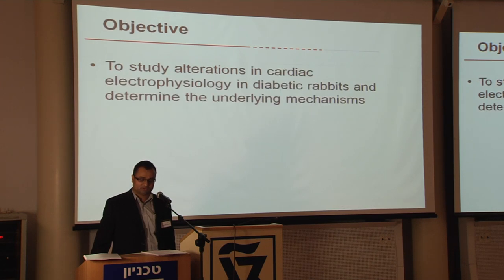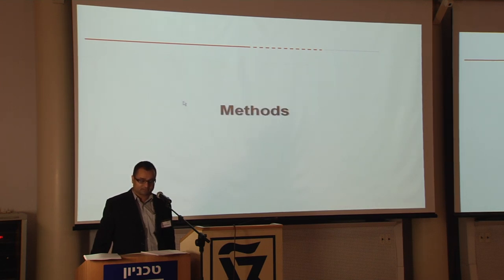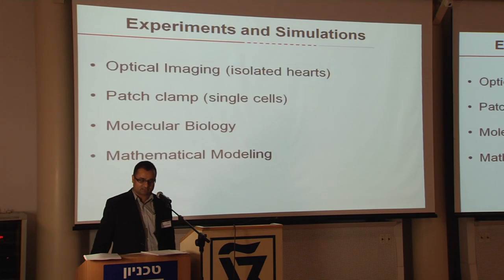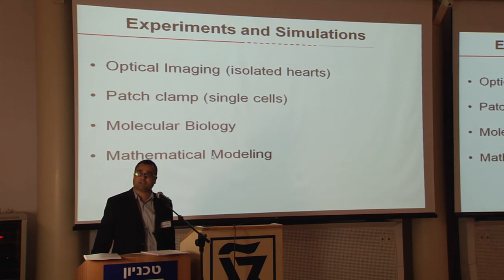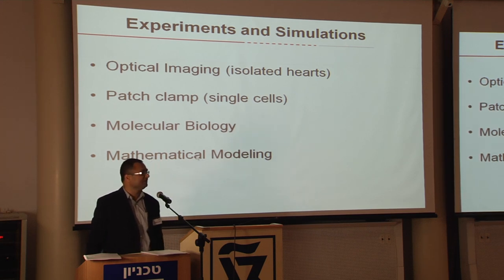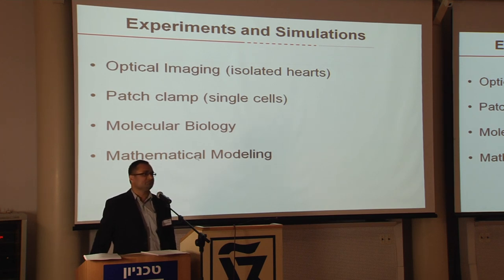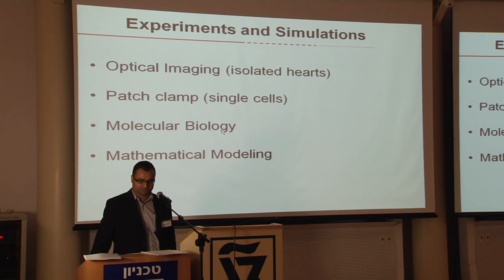With that background, I started my studies in diabetic rabbits. The methods I utilized include optical imaging of isolated hearts, patch clamp in single cells, molecular biology, and mathematical modeling. I'll briefly touch upon each of these methods to give you a glimpse of what each technique can do.